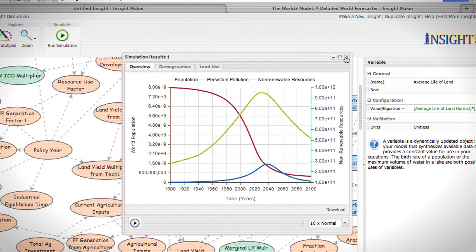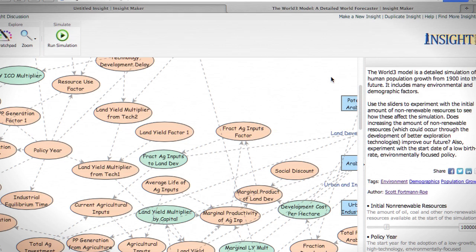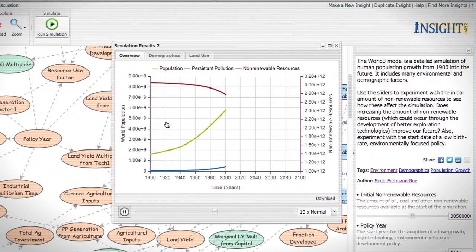There's a variable in the model called the Initial Non-Renewable Resources, things like coal, oil, how much is available in the world. The fact of the matter is, we have access to much more non-renewable resources today than we did back then. So you can experiment with this and say, what happens if we started with more non-renewable resources than they assumed?